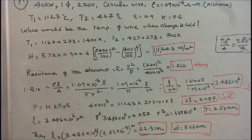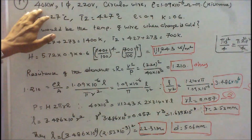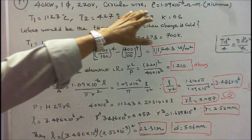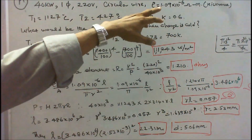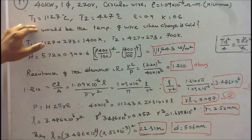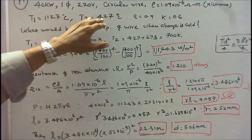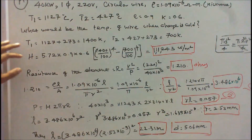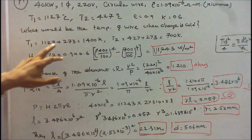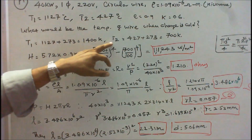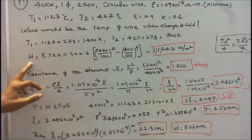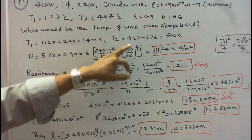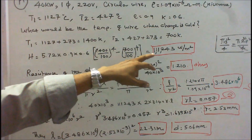In this problem, the given data are: input power is 40kW, single-phase resistance oven, supply voltage is 220V, and the wire is circular. Resistivity of nichrome is 1.09×10⁻⁶ ohm-meter. T1 is 1127°C, T2 is 427°C, emissivity is 0.9, and radiation efficiency is 0.6. Converting to Kelvin by adding 273: T1 equals 1400 Kelvin, T2 equals 700 Kelvin. Using the formula H = 5.72 × A × E × [(T1/100)⁴ − (T2/100)⁴], H equals 11,243 W/m².